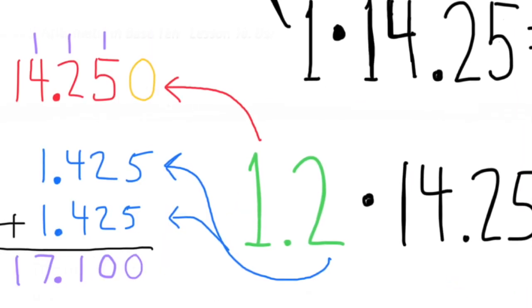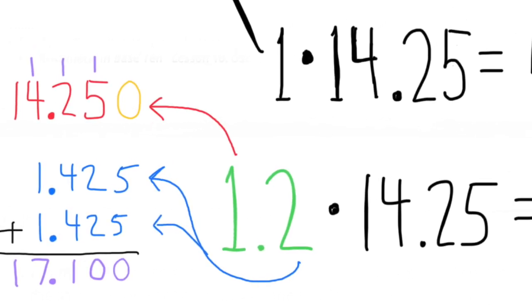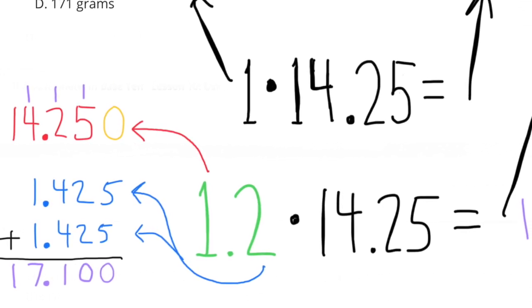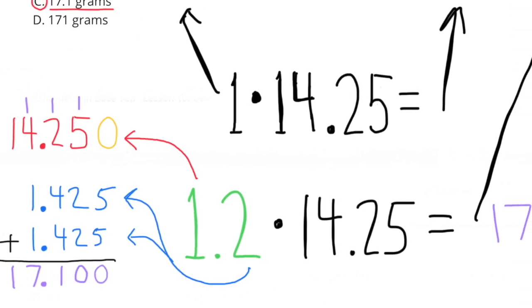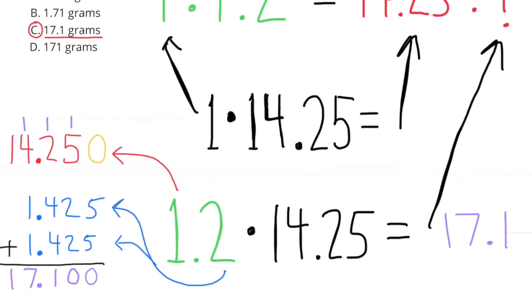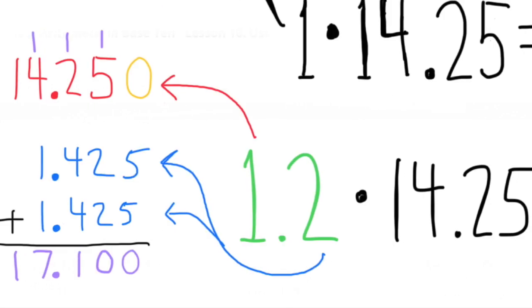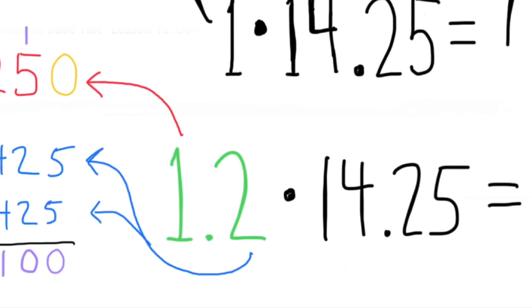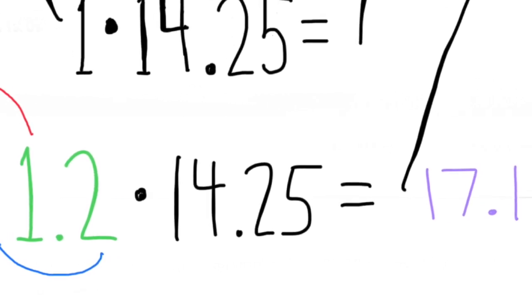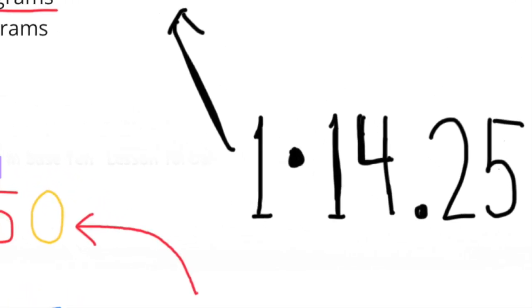So, I wrote 1.425 to represent 1 tenth, and underneath it I wrote 1.425 to represent the second tenth, and when I added those up, 14.25 plus 1.425 plus 1.425, I got 17.1, which is the same thing you'll get if you multiply 1.2 times 14.25. So, my answer is C, 17.1 grams.